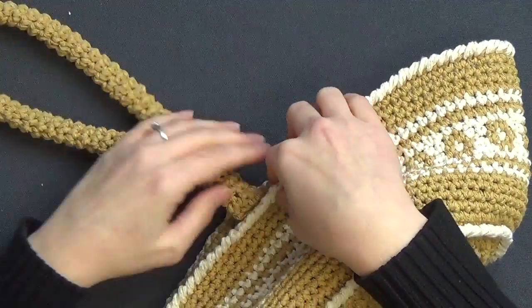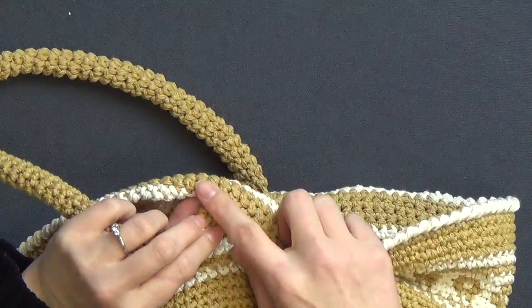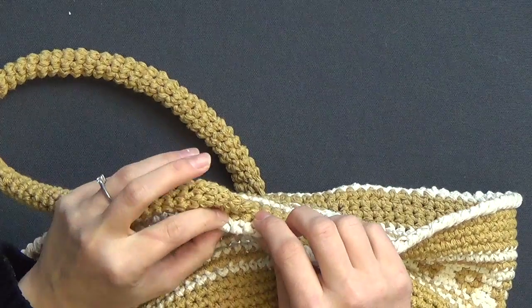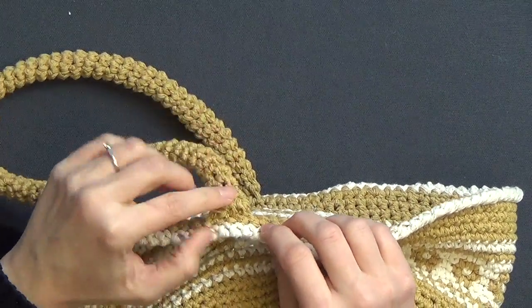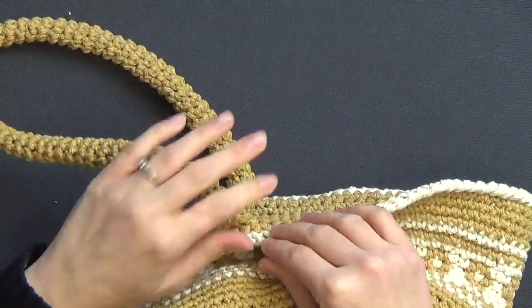Once you've finished your handle you can go ahead and sew it to your basket. Now I chose to sew my handle in flat one row below the last row of color A and I just did a quick whip stitch to add the handle to the inside of the basket.